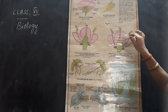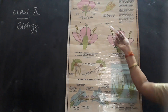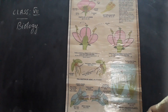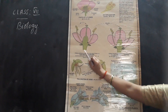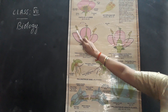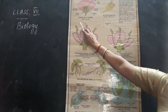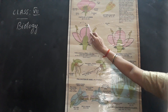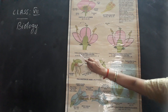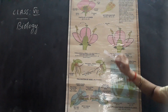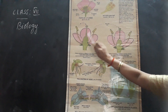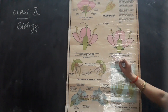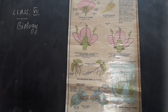Pollination is carried by wind, water, insects, birds, etc. Pollination takes place in two types: self-pollination and cross-pollination. When pollen grains transfer through any of the agents of pollination, they reach the stigma. If it is of the same flower, then it is called self-pollination. If the transfer of pollen grains is from the anther of one flower to the stigma of another flower, then it is called cross-pollination.